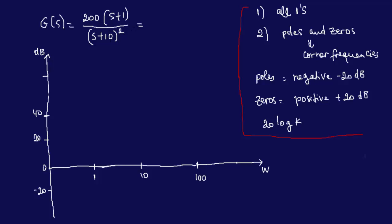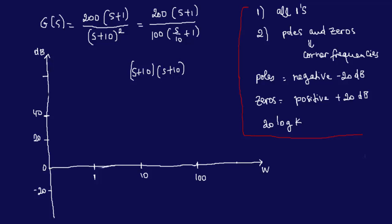We'll have to make sure that all of them are in the form (s/a + 1). So what we're going to do is factor out 200(s + 1). Because of the square, we have 100(s/10 + 1). The reason we have that is because we have (s + 10) twice — (s + 10)(s + 10). If you take that out, it would be (s/10 + 1), and then (s/10 + 1) again. You multiply 10 by 10, that's why we have 100. And of course we can't forget the square.